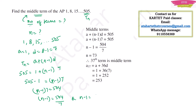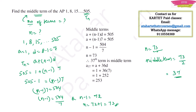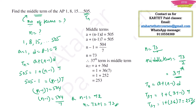With n = 73 terms, the middle term is the 37th term. Using t_n = a + (n−1)d: t_37 = 1 + (37−1)×7 = 1 + 36×7 = 1 + 252 = 253. So the middle term is 253.